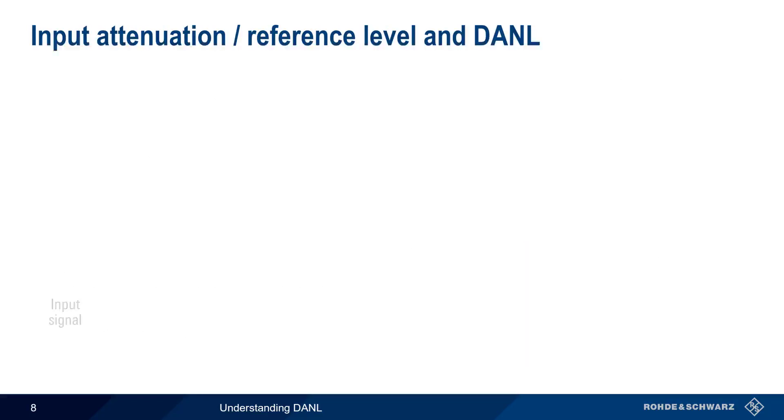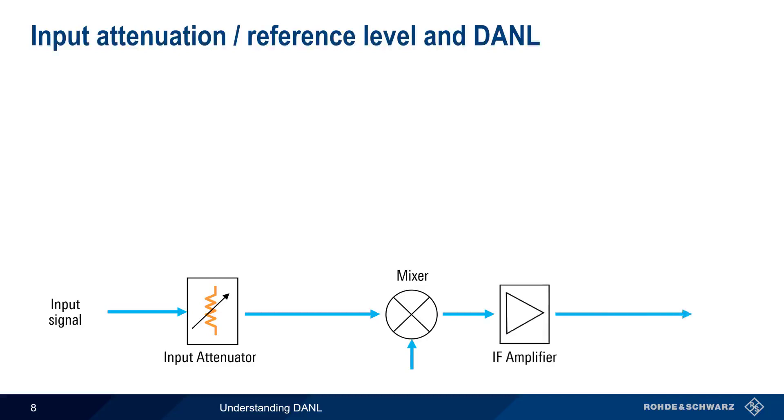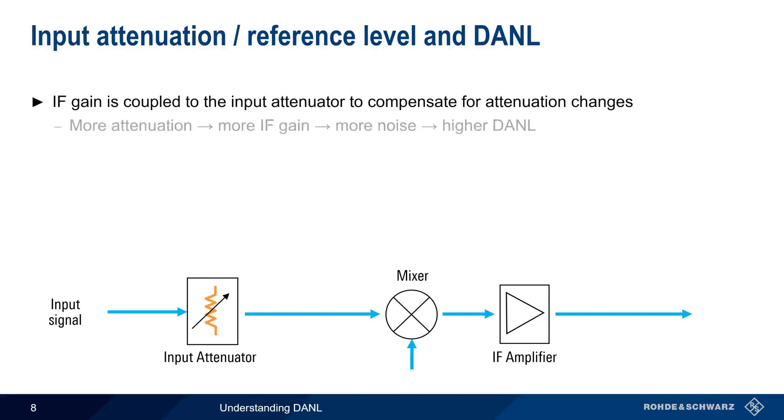In most spectrum analyzers, the input signal passes through an input attenuator before being downconverted by a mixer to an IF or intermediate frequency. This downconverted signal is then amplified by an IF amplifier. In order to ensure that the signal level is reported properly, the gain of the IF amplifier is coupled to the input attenuator settings. If input attenuation is increased, then gain must also be increased by the same amount. This higher gain increases the amount of added noise, and thus also increases DANL.